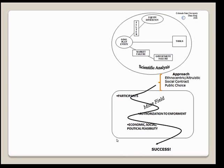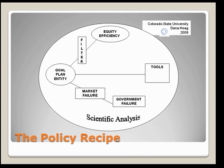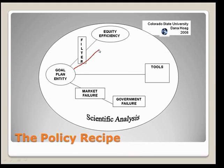Now let's talk a little more about each of these circles. Don't worry if you're not following everything right now — as we move through the semester we're going to talk about each of these in detail. The circle in the policy recipe on the far left has my three parts of the definition of a good policy: a goal, a plan, and an entity. We're going to go through each one as we go through the semester. Let's start with goal — notice as I move from goal to efficiency and equity, these are the official objects or goals that society should be interested in.